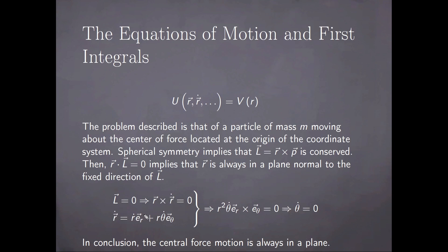The velocity itself can be written in spherical polar coordinates as shown here, so what this will imply immediately is that the first cross product vanishes, but the other one is non-vanishing, and since the total expression has to be zero, it follows that the angular velocity has to be zero. So the general conclusion is that the central force motion is always in a plane.